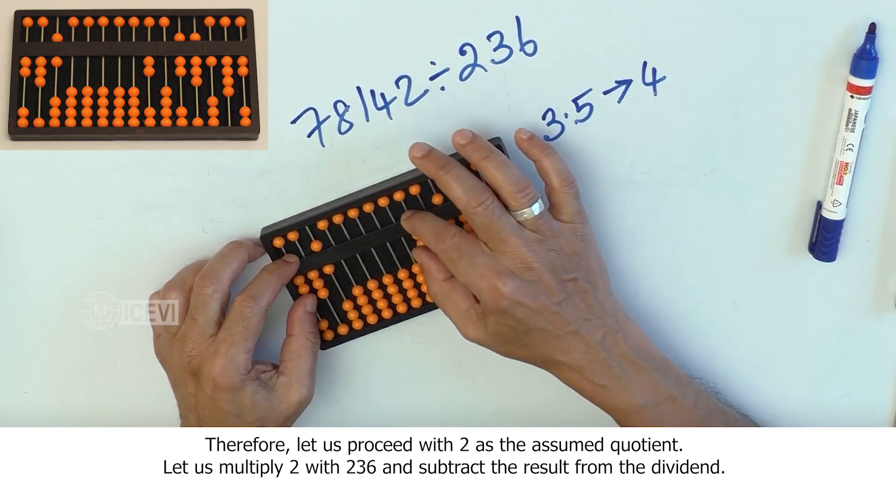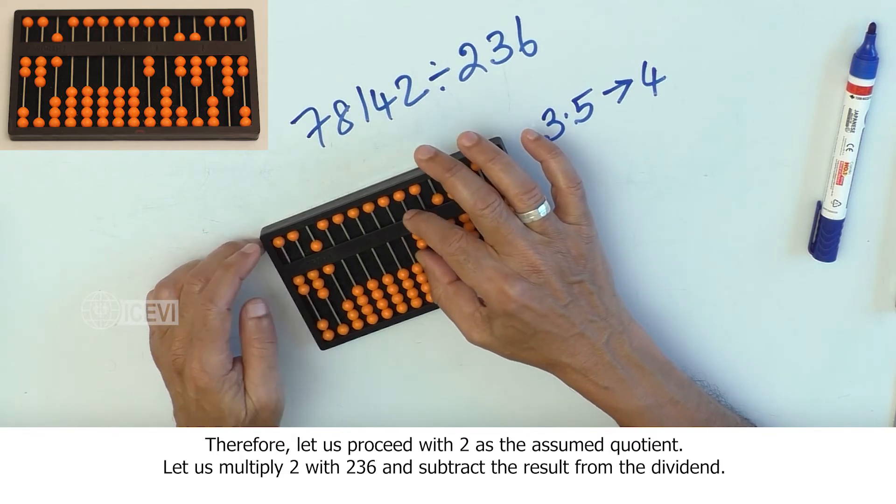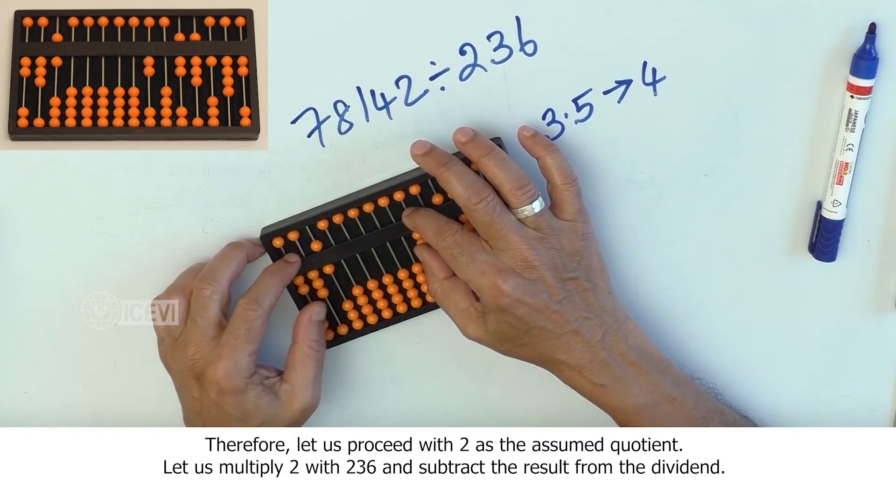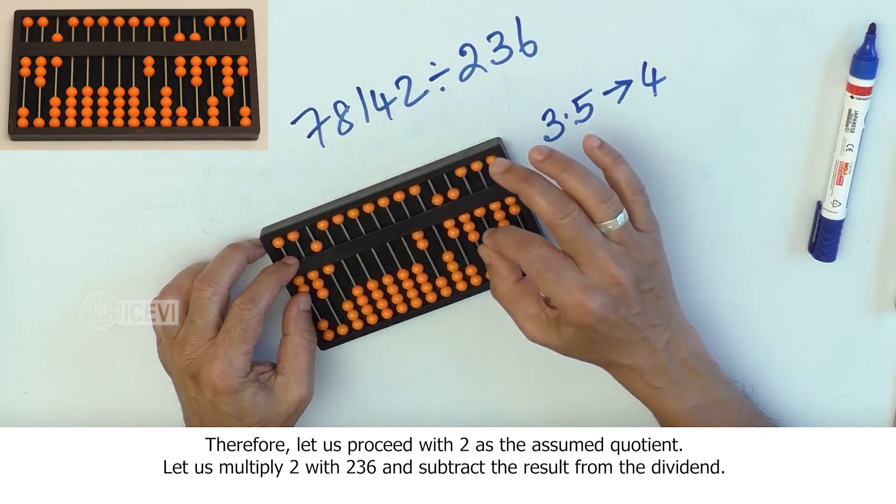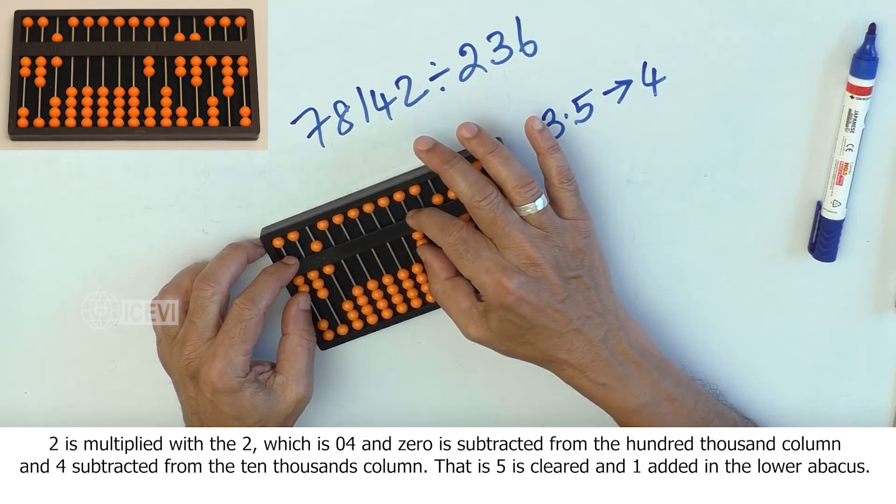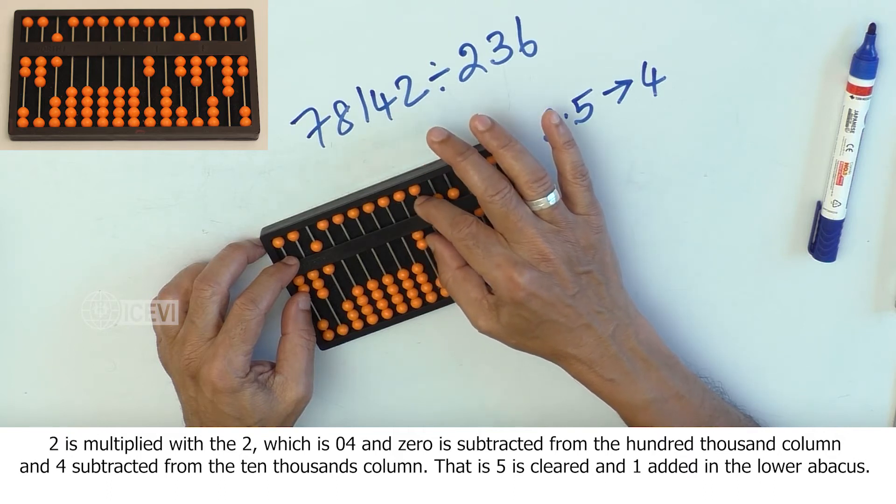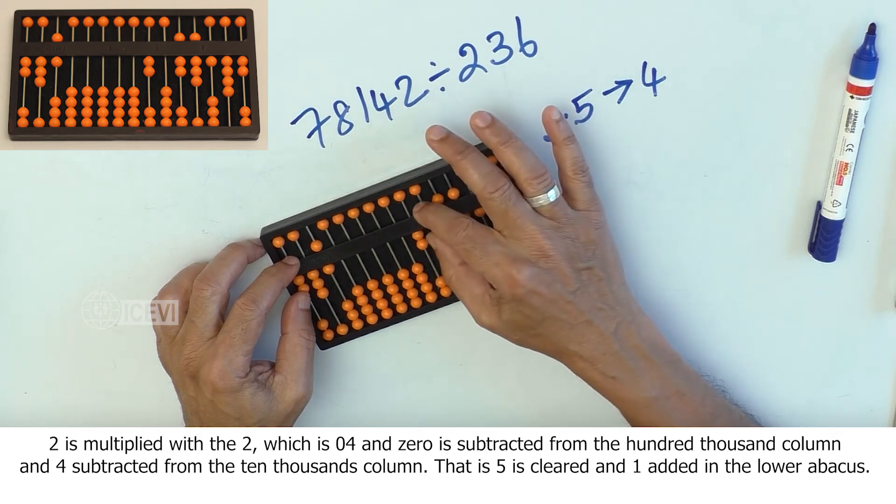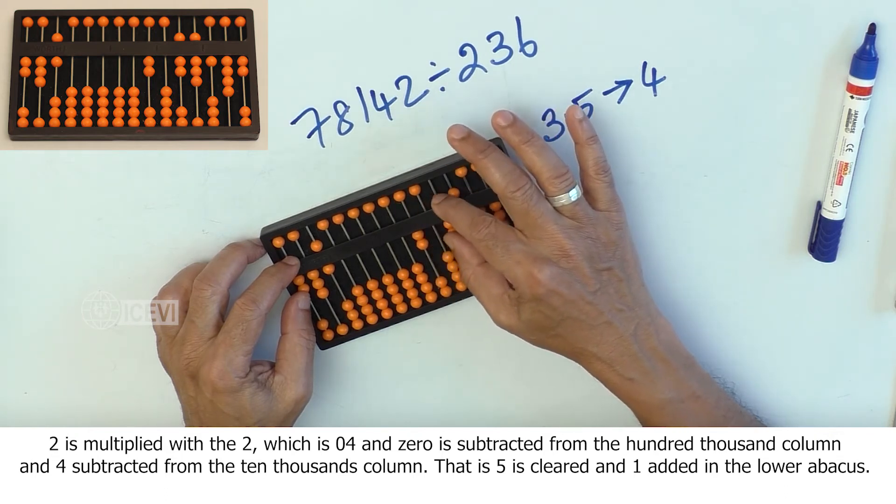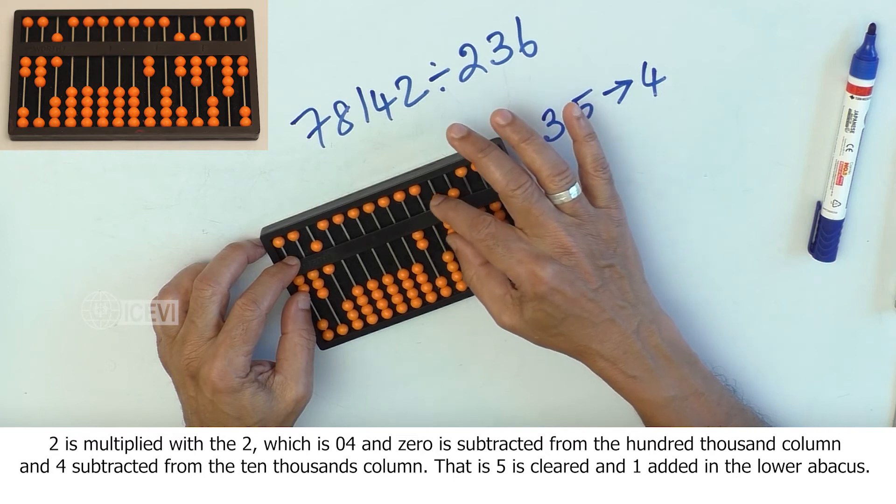Let us multiply 2 with 236 and subtract the result from the dividend. 2 is multiplied with 2 which is 04 and 0 is subtracted from the 100,000 column and 4 subtracted from the 10,000 column.